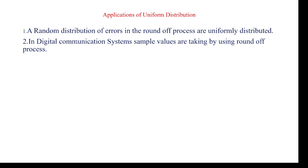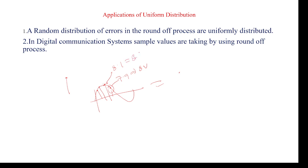Coming to the application — uniform distribution is used in communication systems for rounding off values. For example, while taking sample values, because in communication systems we sample signals to convert analog signals to digital. In these samples, using uniform distribution we round off values — for example, 7.9 becomes 8 volts, or 8.1 also becomes 8 volts. So it is used to easily obtain rounded values.